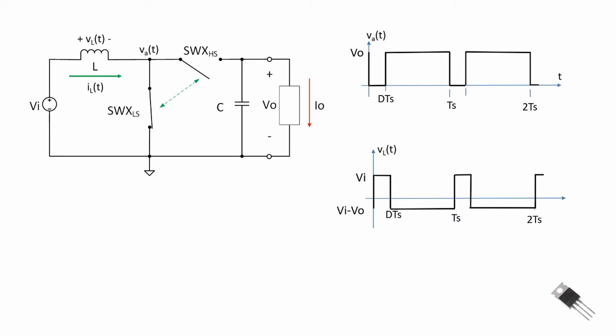Now let's look at the node voltage to derive an equation relating output voltage to input voltage. We'll make some assumptions, as in the previous videos on the buck converter: we assume the current flowing through the inductor is continuous, so we are in continuous conduction mode. We also assume the output voltage V_o and output current I_o are both constant. Now let's look at node voltage V_a when the switch is closed.